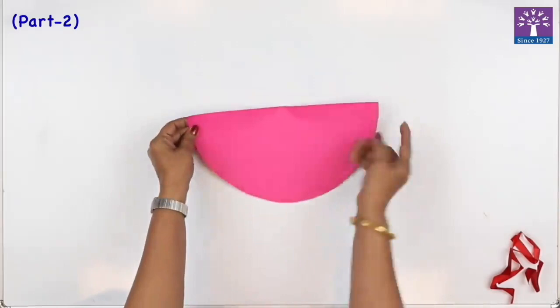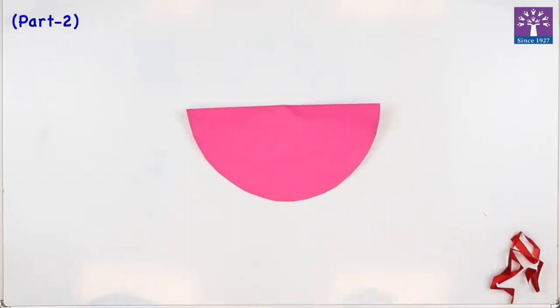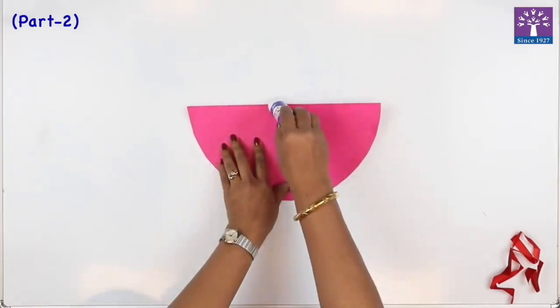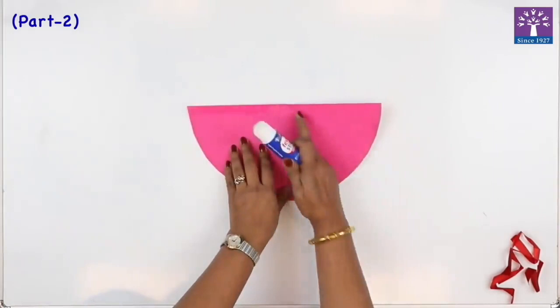Now we are going to apply the glue on the reverse side of the straight line. You can apply only the half part, over here. I have not applied here, I just applied on the half side.